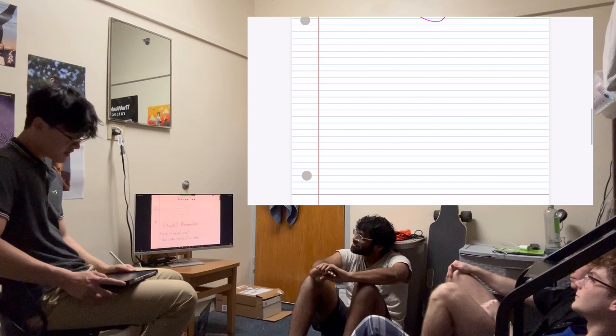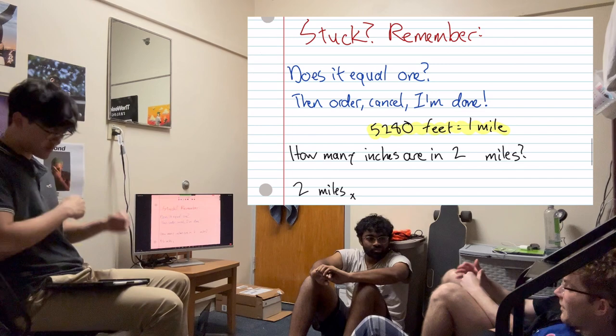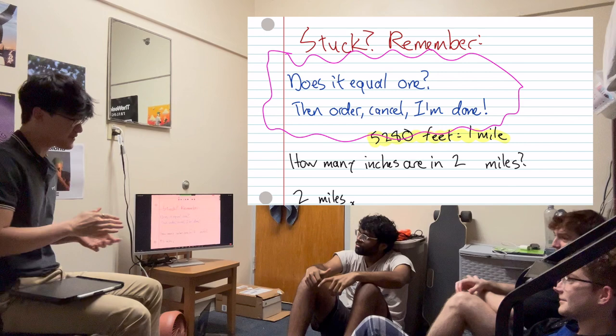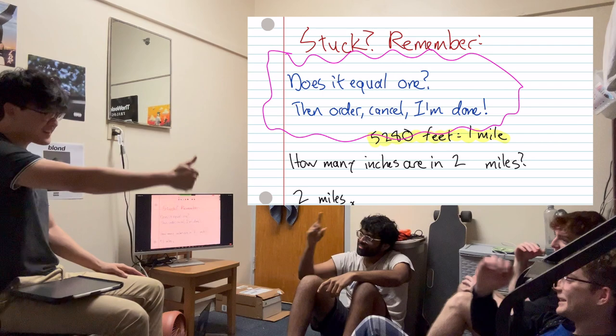And now, we'll learn a chant. Here's our phrase. Alright guys, follow my hand motions, remember? Alright, we're ready? Does it equal 1? Then order. Cancel. I'm done. That's it. Everyone say it with me. Does it equal 1? Then order. Cancel. And done. That's all it is.